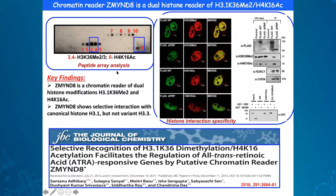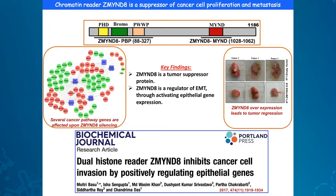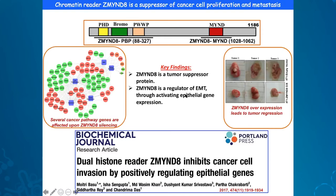H3K36 dimethylation and H4K16 acetylation co-localize with wild type ZMYND8 but not with the PWWP domain-deleted protein, and co-immunoprecipitation analysis showed that PWWP domain-deleted constructs can no longer bind to H3K36me2 and H4K16ac marks. Testing individual domains in vitro confirmed that H3K36me2 interacts with the PWWP domain, while the MYND finger domain does not interact with either of these histone modifications. Functionally, we found that ZMYND8 regulates a class of all-trans-retinoic acid responsive genes, and in another study we observed it regulates a plethora of genes involved in cancer pathways — establishing it as a tumor suppressor protein. Silencing ZMYND8 turns on genes involved in cell proliferation, cancer promotion, and EMT.